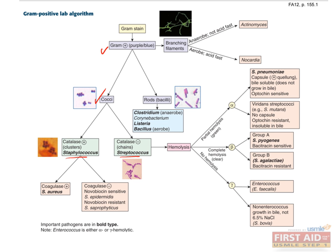Now test whether it is coagulase-positive or negative. Coagulase is an enzyme produced by staph aureus which enables the conversion of fibrinogen to fibrin and results in clotting of blood. Coagulase-negative organisms that do not clot blood will be staph epidermidis or staph saprophyticus.